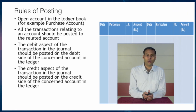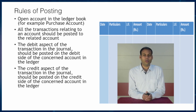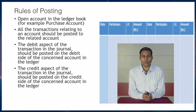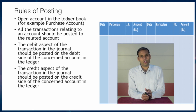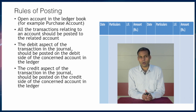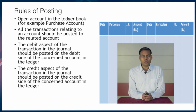The credit aspect of a particular transaction in the journal book also has to be posted in the ledger. We consider the credit aspect of the transaction in the journal and post it to the respective ledger account — specifically on the credit side of that ledger account, where the particular account name is recorded.